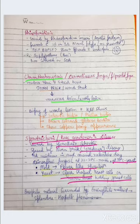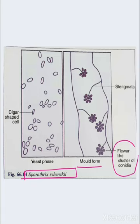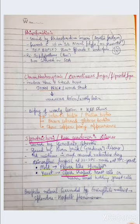This is the structure of Sporothrix schenckii. We can see the mold form is flower-like with a cluster of conidia arranged like a flower. There are cigar-shaped cells, which are the yeast form, and this is the sterigmata. The basophilic material surrounded by eosinophilic material is the Splendore-Hoeppli phenomenon.